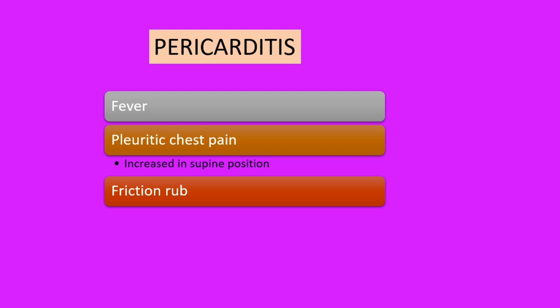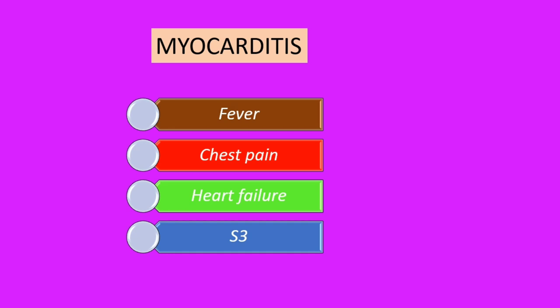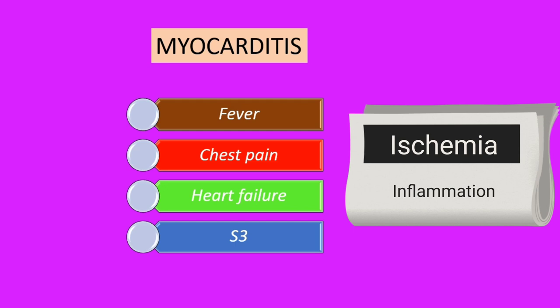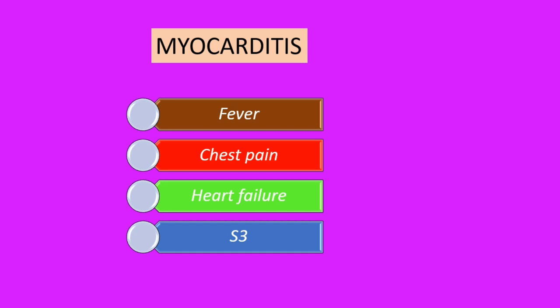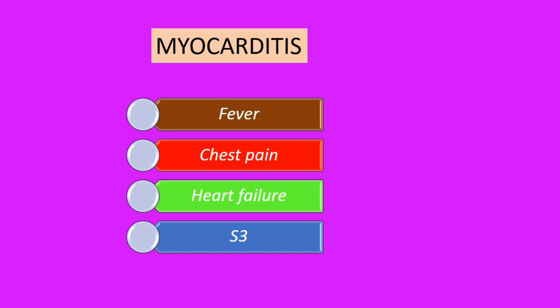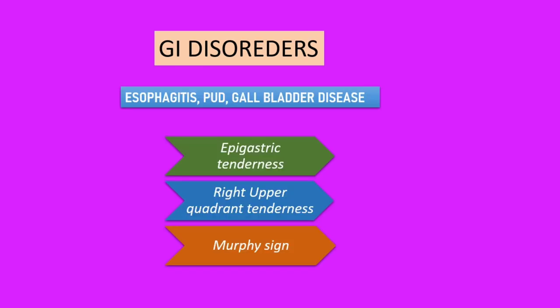Similar to pericarditis, myocarditis can also present with chest pain. The chest pain of myocarditis has both ischemic and pericarditic characteristics. If there is myocardial involvement and blood flow is disturbed by inflammation, patients can have ischemic chest pain. If there is concomitant involvement of the pericardium — the condition known as myopericarditis — a pericarditic element of chest pain can also be present. The history typically indicates a febrile illness with chest pain, and the patient may show signs of heart failure with an S3 heart sound on auscultation.